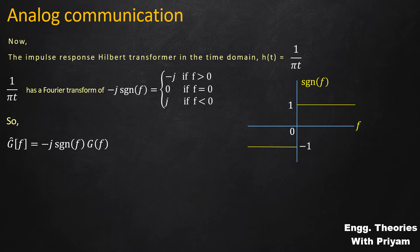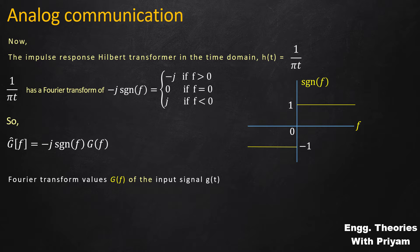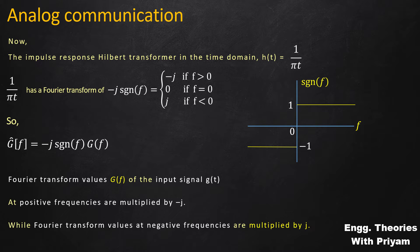The Hilbert transform is easier to understand in the frequency domain. It does not change the magnitude of the Fourier transform G(f); it only changes the phase by multiplying by −j·sgn(f). At positive frequencies, values are multiplied by −j, corresponding to a phase change of −π/2, while at negative frequencies, values are multiplied by +j, corresponding to a phase change of +π/2.